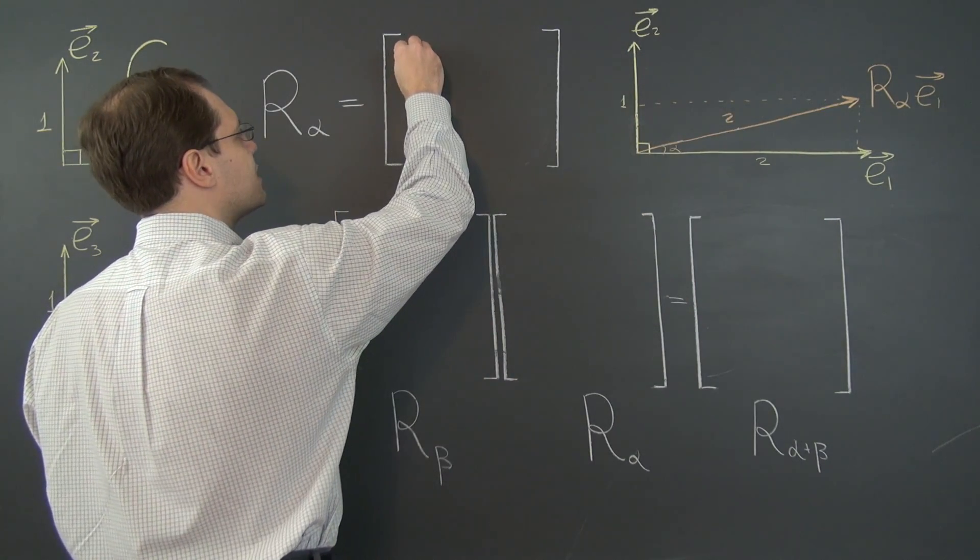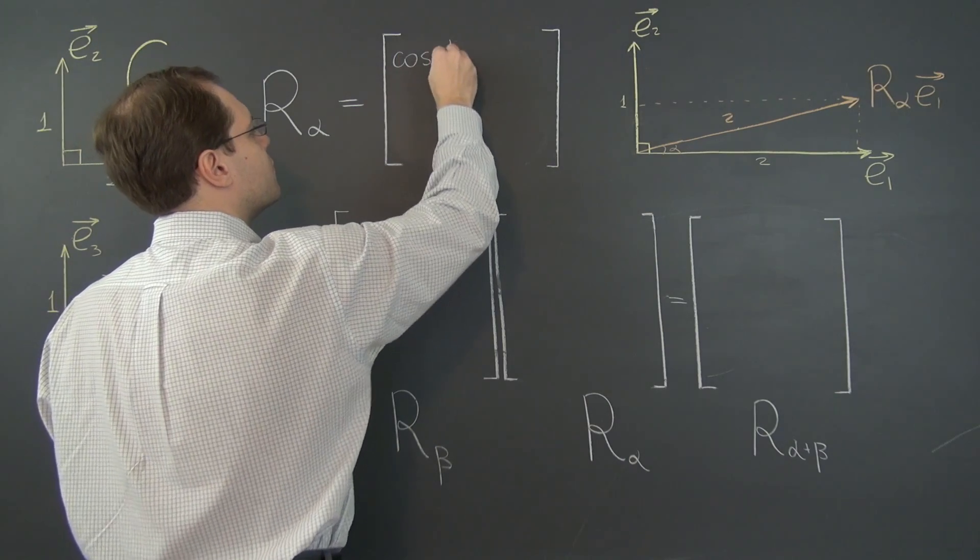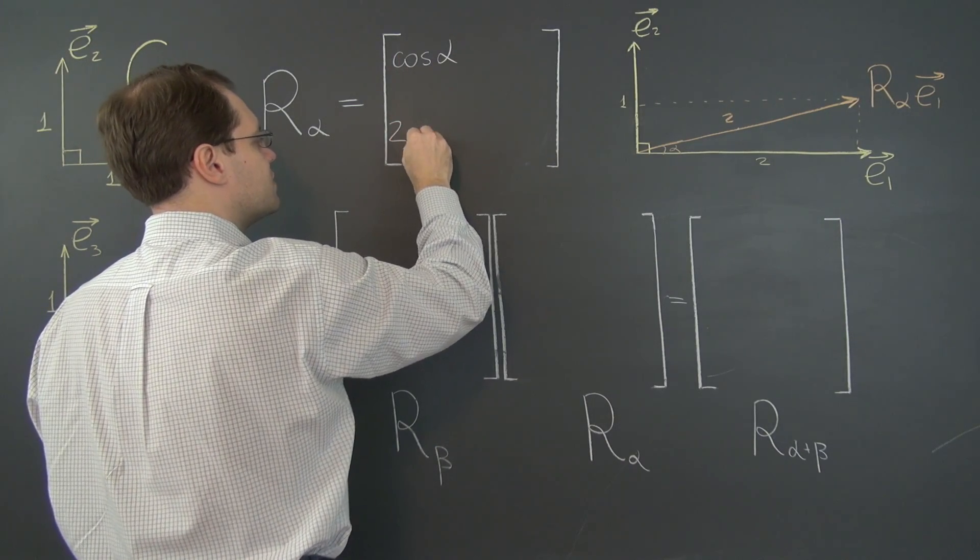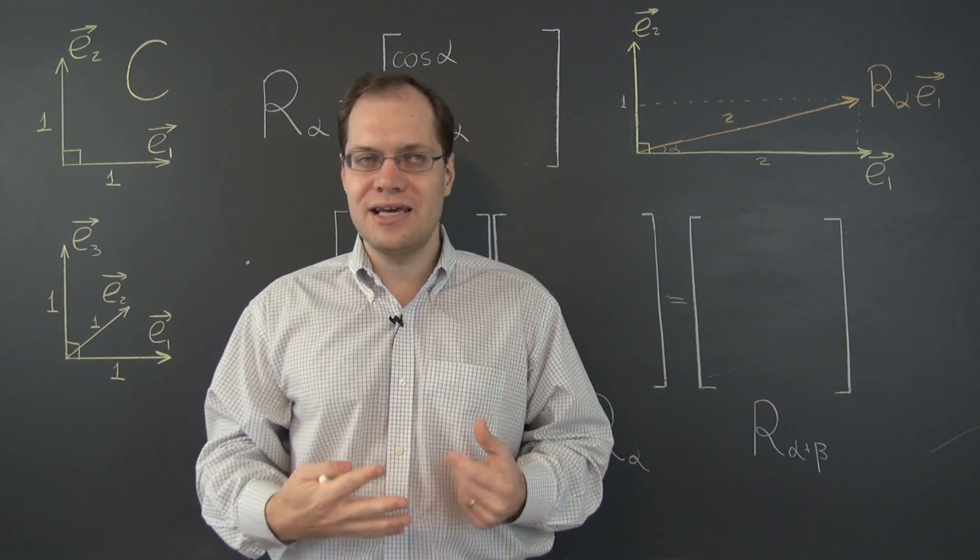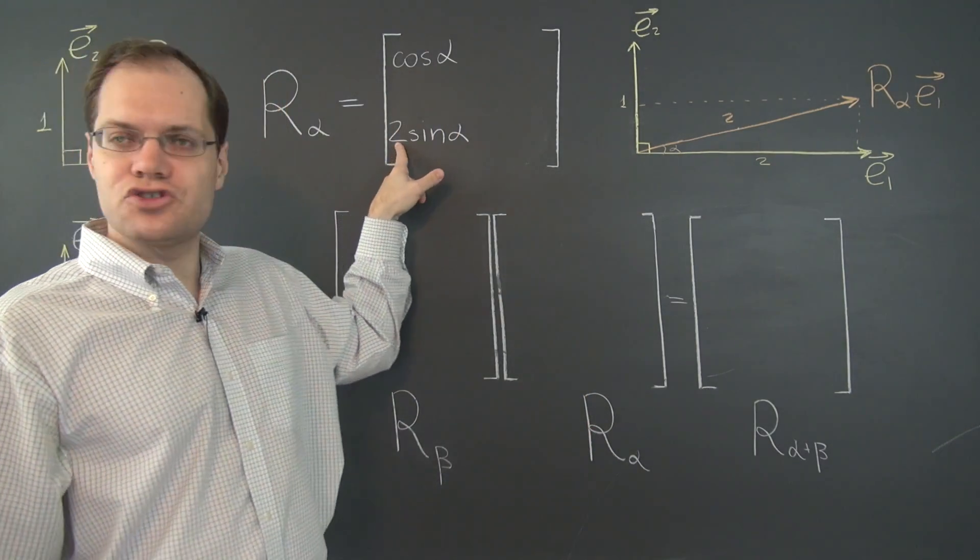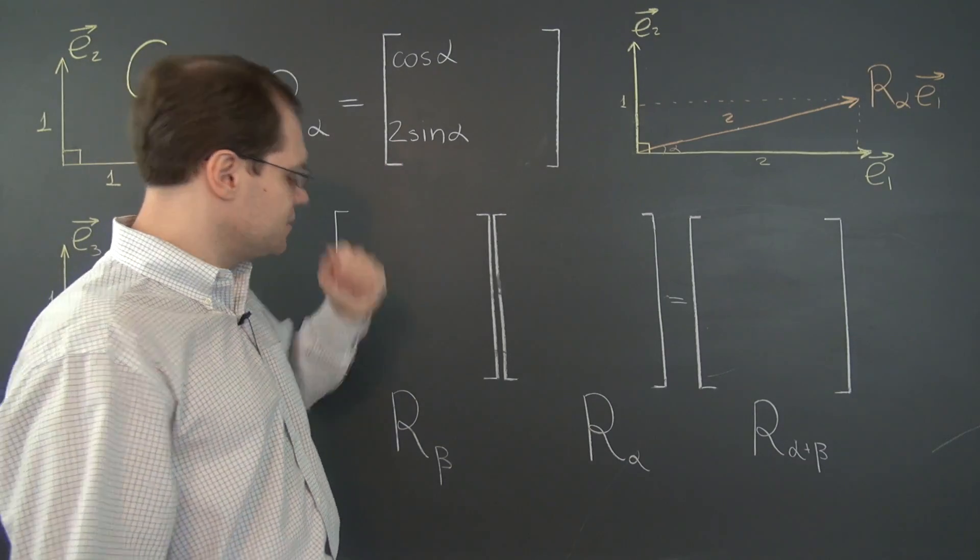So let's put it in: cosine alpha and 2 sine alpha. So similar to the matrix that we obtained in the Cartesian case but there is now this 2. Okay. So different.